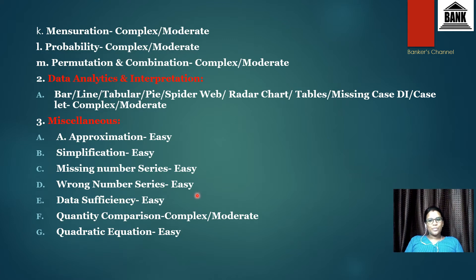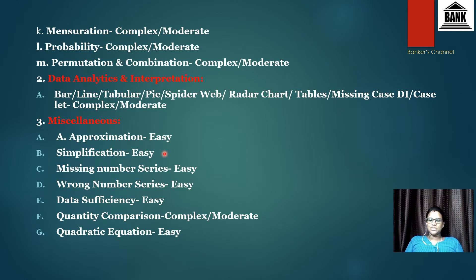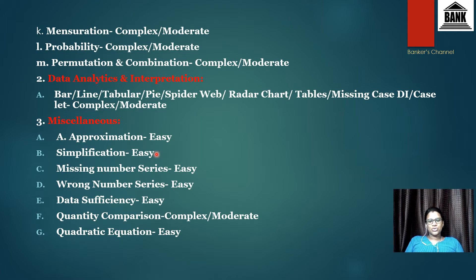Miscellaneous is the easiest section in quantitative aptitude. First one is approximation — we can expect three to four questions in prelims and one to two in mains. Next one is simplification, also one of the easiest topics. The difference is: in approximation you find the approximate value, but in simplification you need to find the exact value. You can expect four to five questions in prelims and one to two in mains.